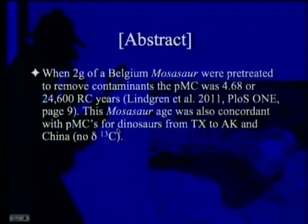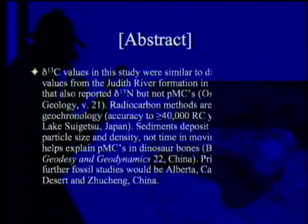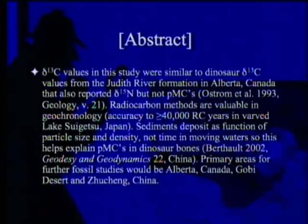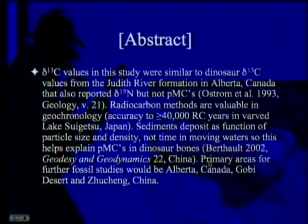This Mosasaur age was concordant with percent modern carbons for dinosaurs from Texas to Alaska and China, though there was no Delta-13C in that particular data. Delta-13C values in this study were similar to dinosaur Delta-13C values from the Judith River Formation in Alberta, Canada, which also reported Delta-15N but didn't test for carbon-14. Radiocarbon methods are valuable in geochronology, and sediment deposits function according to particle size and density — not time in moving waters — which helps explain percent modern carbons in dinosaur bones. Primary areas for further fossil studies will be Alberta, Canada, the Gobi Desert, and Xinjiang, China.